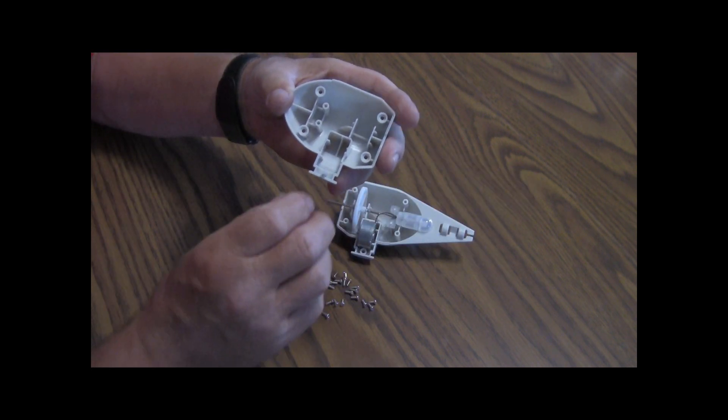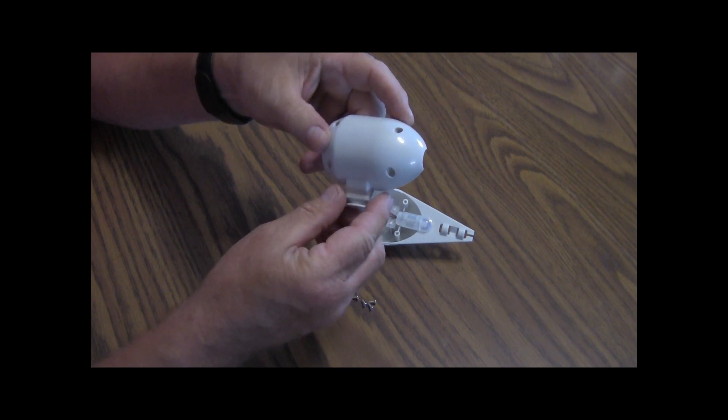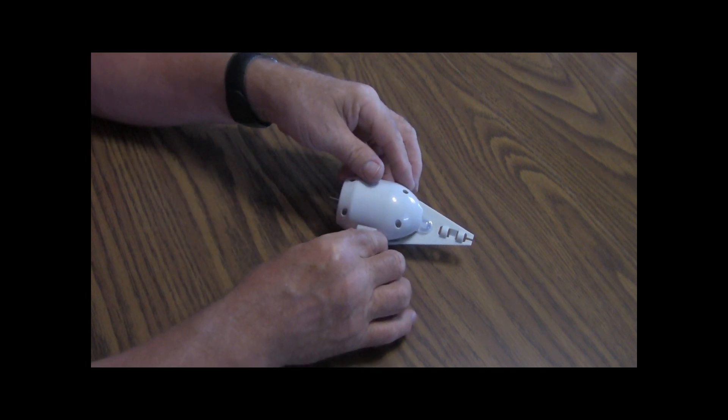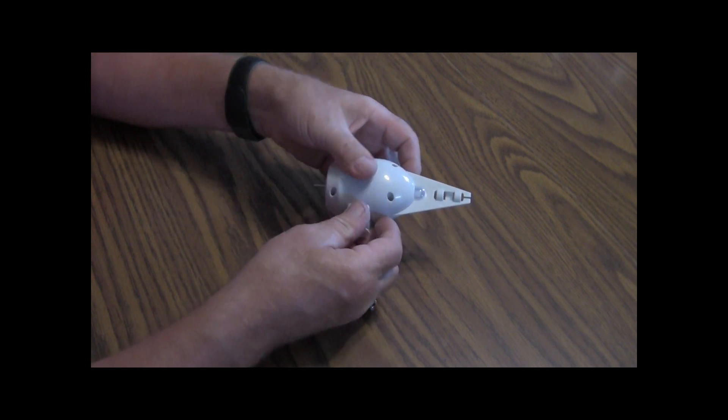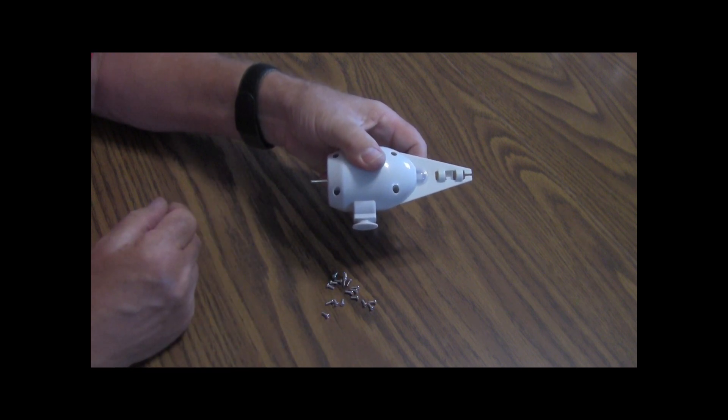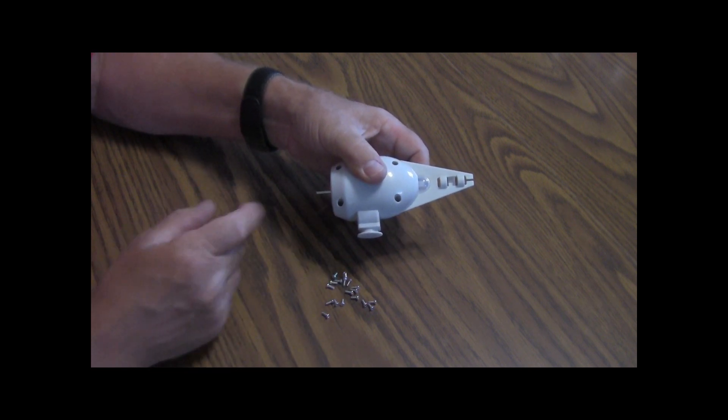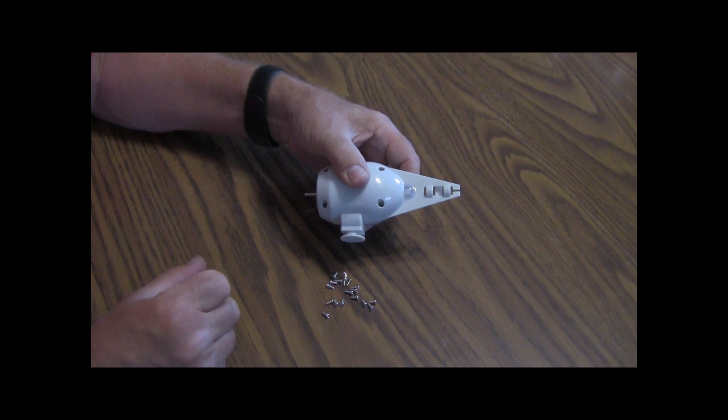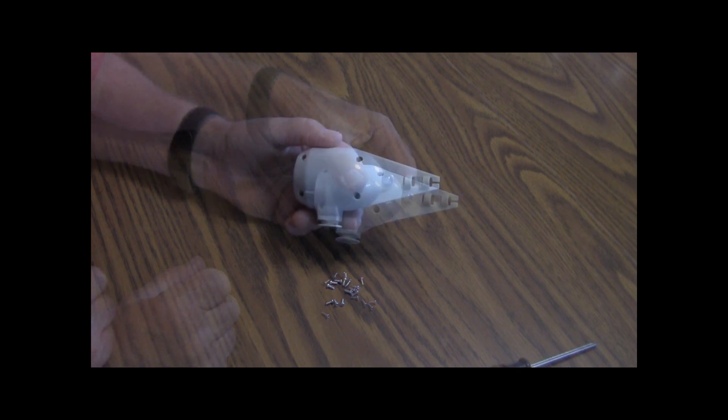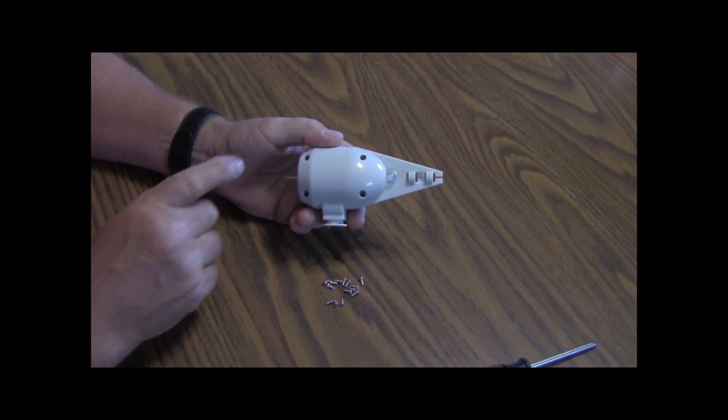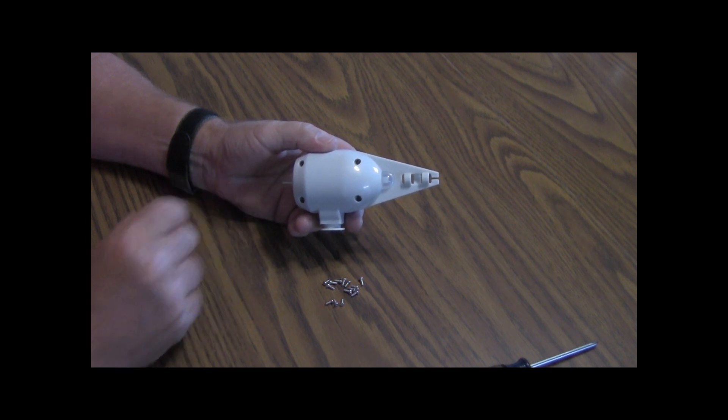Now I'll go ahead and put this cover on it. It only goes on one way, go ahead and just snap it down on there. Make sure your shaft is sticking out the front. I'm going to put a screw in each one of these holes. Takes four screws. There it is, now it's all snugged down. Don't tighten these up too tight because that's only plastic, you can strip the screw out.